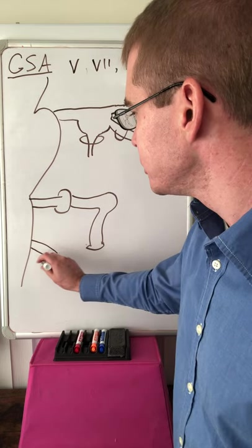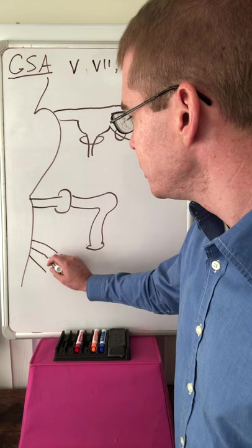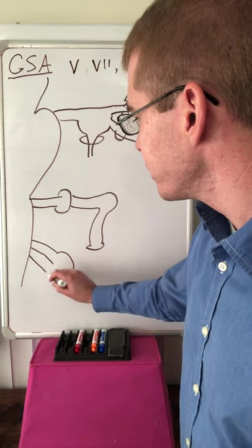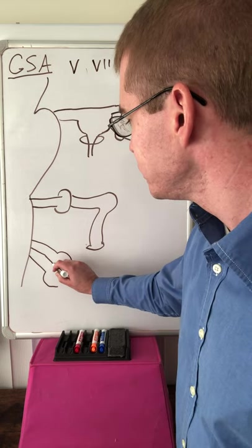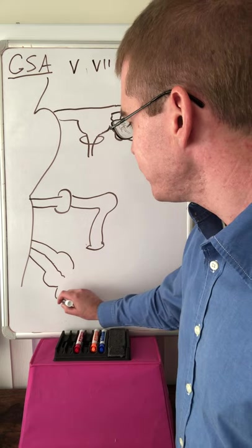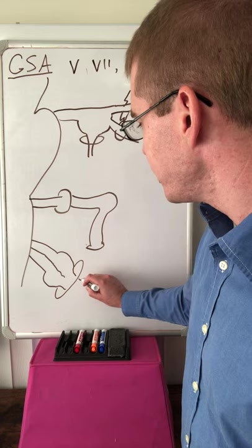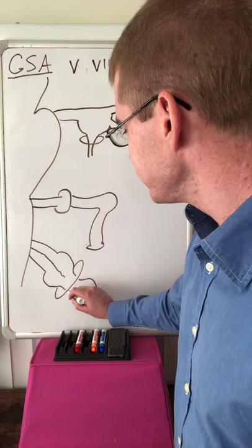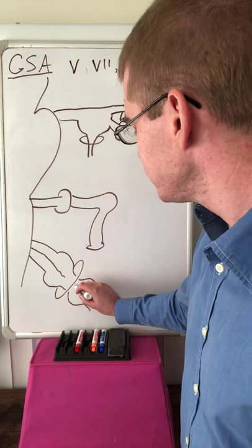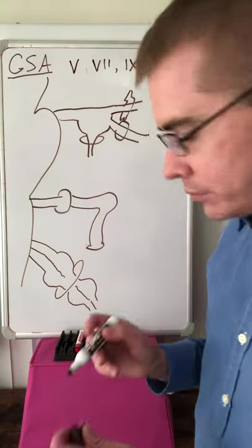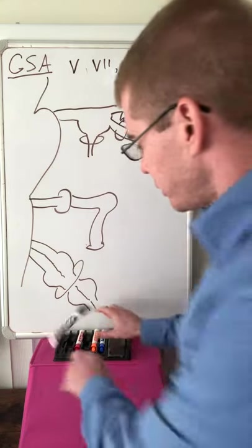So it's got this foramen it goes through. Trigeminal also has its foramina through which it's traveling. So let's draw those in. We need to get all of this information out on this sheet. So facial nerve heads into the facial canal. And now we have what's left. We have 9 and 10. They both have a superior ganglion. They travel through a foramen. And they both have an inferior ganglion.